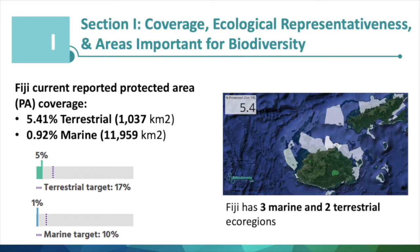For ecological representativeness, the number, name, hectares, and total percent of each ecoregion included in the country are captured, as well as the ecoregion percent in hectares under some form of protection. This data is captured from the Digital Observatory for Protected Areas and the UN Biodiversity Lab. Fiji has three marine ecoregions, with one that has at least 10% protected areas within the country. Fiji also has two terrestrial ecoregions, though no ecoregions there currently have reached the 17% protected areas threshold within the country.